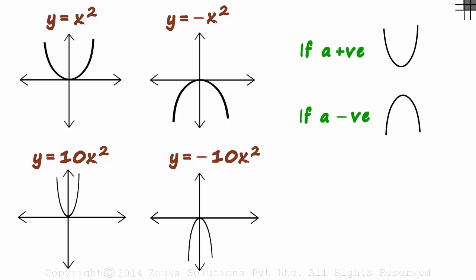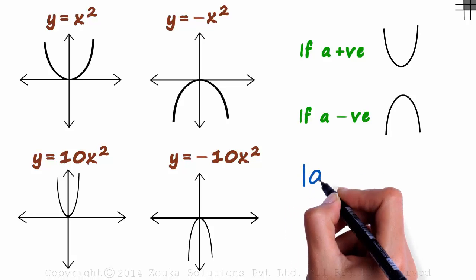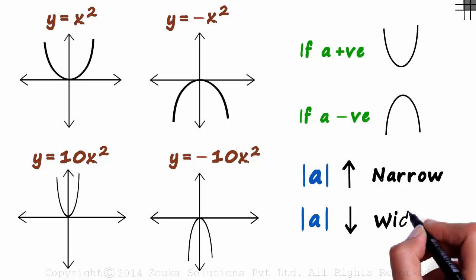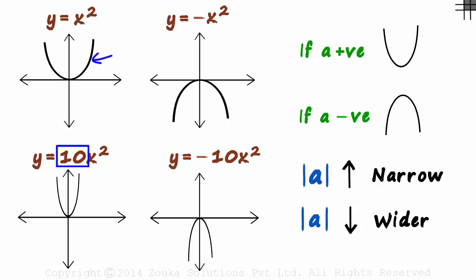There's another thing we can derive looking at these graphs. When the absolute value of a increases, the curve gets narrower. 1 became 10 and we saw that the curve got narrower. And we can say that if the absolute value of a reduces, then the curve will get wider. 10 to 1 and the curve got wider. So no matter what quadratic function you face, you should easily be able to draw or interpret its graph.